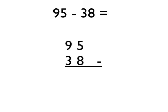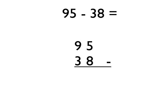Sometimes when you do column subtraction you have to do what's called borrowing. This is an example of a case where you do have to do borrowing: ninety-five take away thirty-eight. Again, lining up the units digits — the five and the eight — and line up the tens digits, the nine and the three. Now start on the right hand side. If you think about five take away eight, that would lead to an answer less than zero, and we can't have that when we're doing column subtraction.